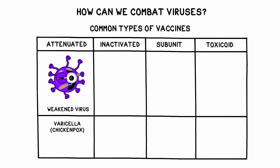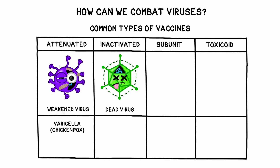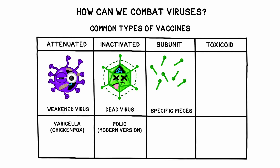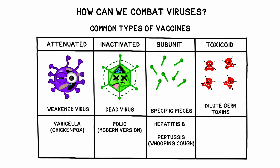Attenuated vaccines use a weakened form of the virus — the varicella vaccine for chickenpox is a great example. Other vaccines use dead or inactive forms of a virus; the modern polio vaccine is made from an inactivated form of the polio virus. Subunit vaccines are made from specific pieces of the virus or pathogen that will trigger an immune response; examples include the inoculations for hepatitis B and pertussis, also known as whooping cough. Many viruses and bacteria produce harmful chemicals as they multiply in the body. Tetanus and diphtheria are caused by bacteria, not viruses, but the toxins they produce can be deadly. The vaccines for these diseases use a tiny dose of a weakened form of the toxic chemical, which offers future protection.